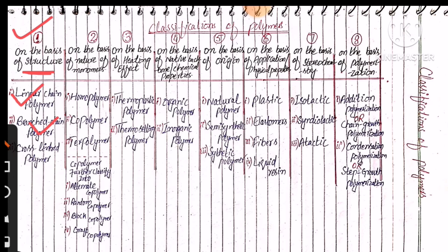On the basis of nature of monomers, we can classify polymers into three subclasses: first is homo polymer, second is co-polymer, and third is terpolymer. Co-polymer is further classified into four subclasses: first is the alternate co-polymer, second is the random co-polymer, third is the block co-polymer, and fourth is the graft or gradient co-polymer.